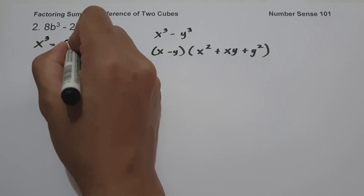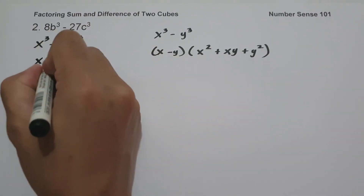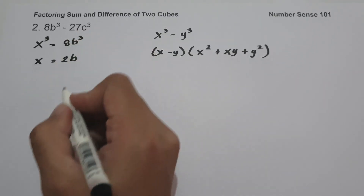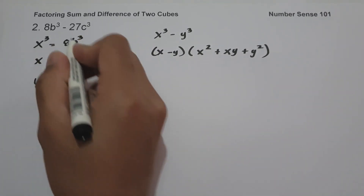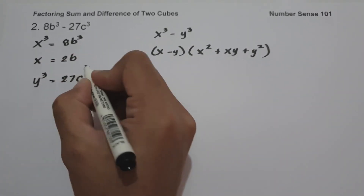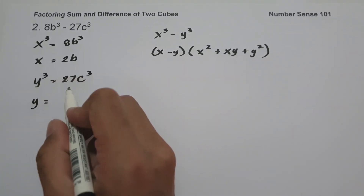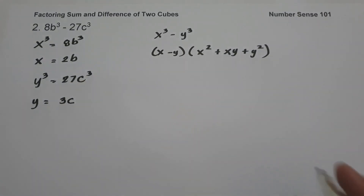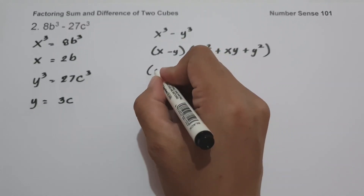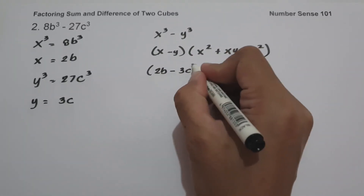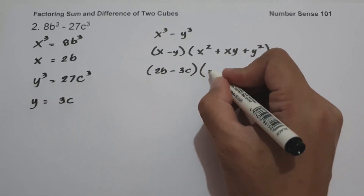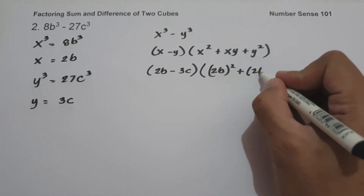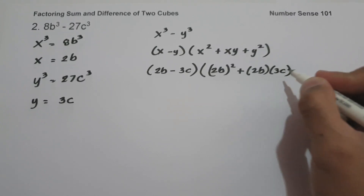x³ is the first term, 8b³. To find the value of x, the cube root of 8b³ is 2b. Then y³ is the last term, 27c³. To find the value of y, the cube root of 27c³ is 3c. So we have x − y, which is 2b − 3c, and then x² is (2b)², plus x times y is 2b times 3c.